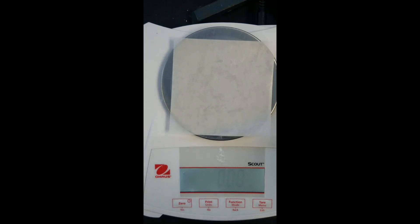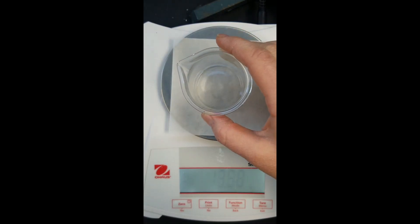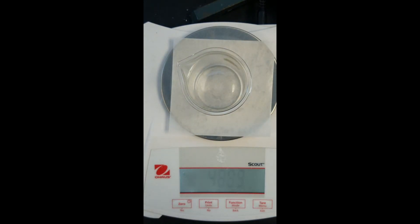We're going to determine the percent fat in potato chips. So we're going to start by taking a 100 milliliter beaker and recording its mass. Make sure you write down the mass of this 100 milliliter beaker.